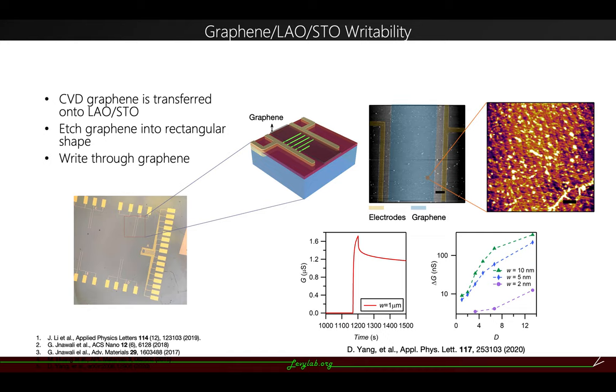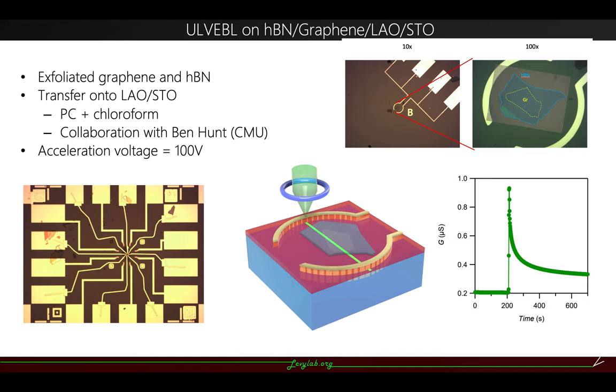When I use the EBL to expose a nanowire connecting these two electrodes across the graphene, we can observe a clear conductance jump from this writing process, which shows the ultra-low voltage e-beam lithography can write through the graphene and create connecting structures at the LAO-STO interface.